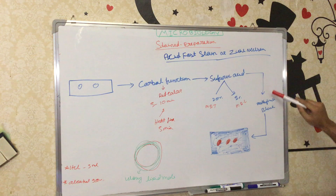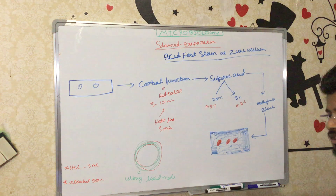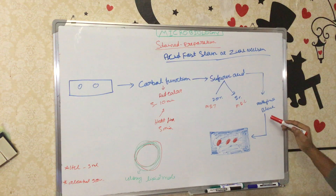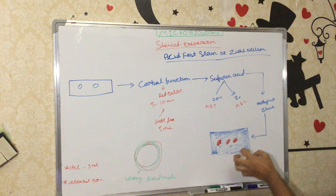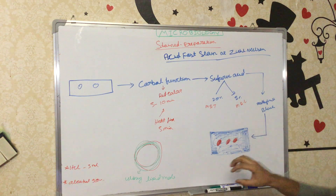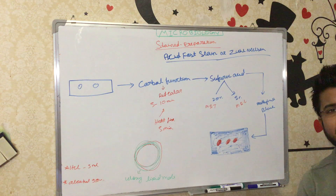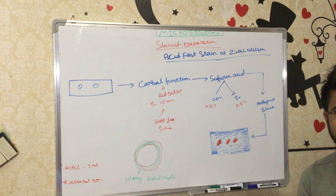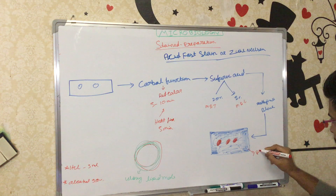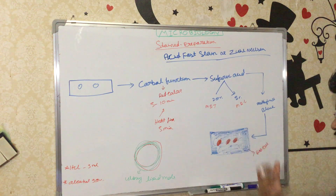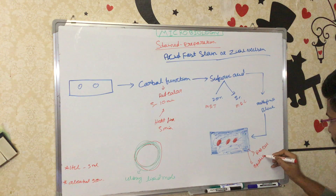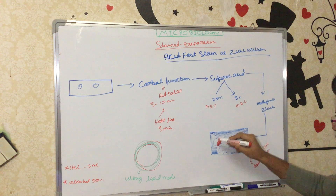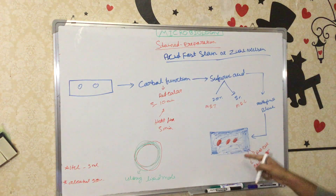After washing, we add the counterstain — methylene blue, crystal violet, or gentian violet — and then examine under the microscope. The background area appears blue: since we took sputum, this background may represent pus cells, exudate, or epithelial cells from the patient, all of which stain blue.